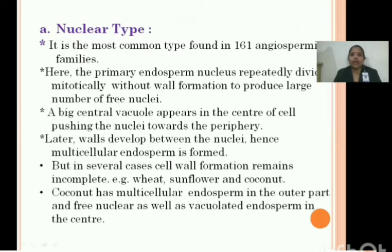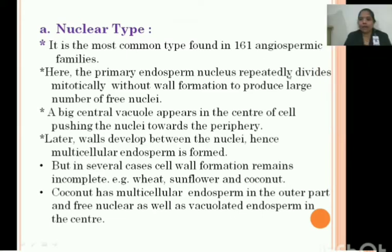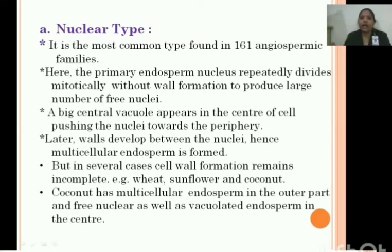The nuclear type is the most common type. The primary endosperm nucleus repeatedly divides mitotically without wall formation, producing a large number of free nuclei. A big central vacuole appears at the center of the cell, pushing the nuclei towards the periphery. Lateral walls then develop between the nuclei, hence forming multicellular endosperm.